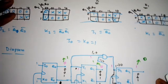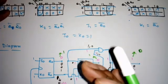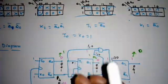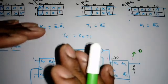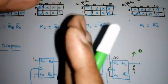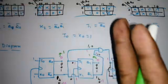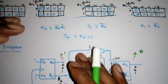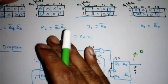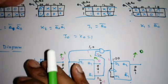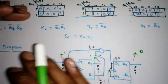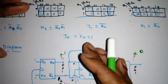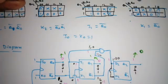This completes the modulus 8 synchronous down counter, or 3-bit synchronous down counter using JK flip-flop. In the next lecture we will see modulus 6 or modulus 10 counters, where we stop the count in between. A 3-bit counter can count up to 8, but we can stop at an earlier value, which we will cover in the next lecture.